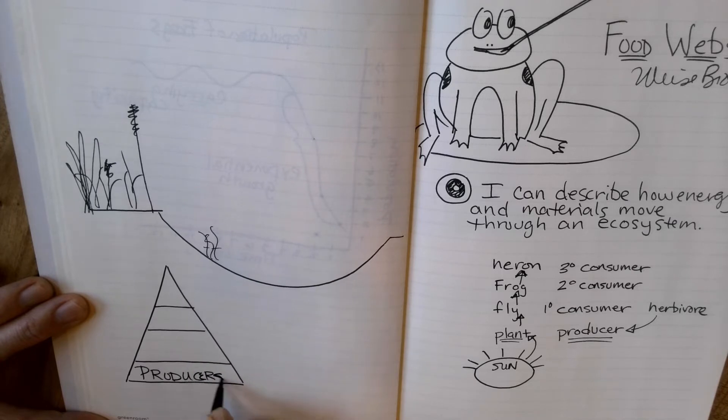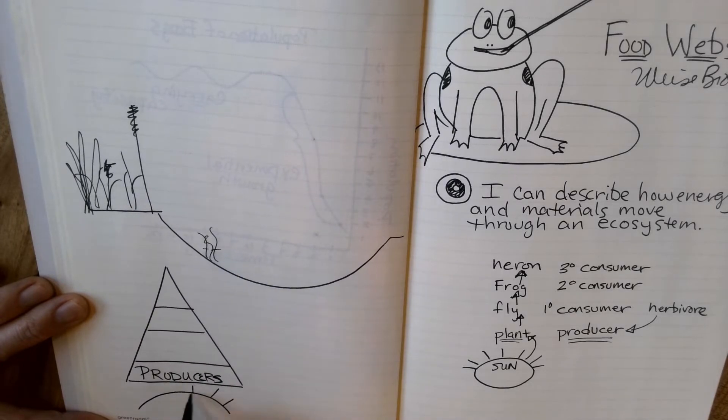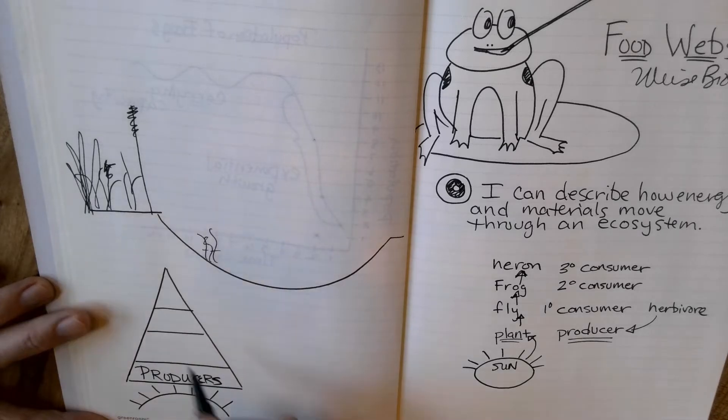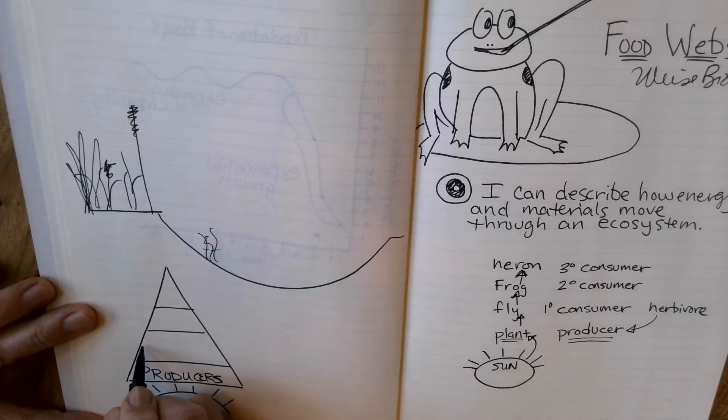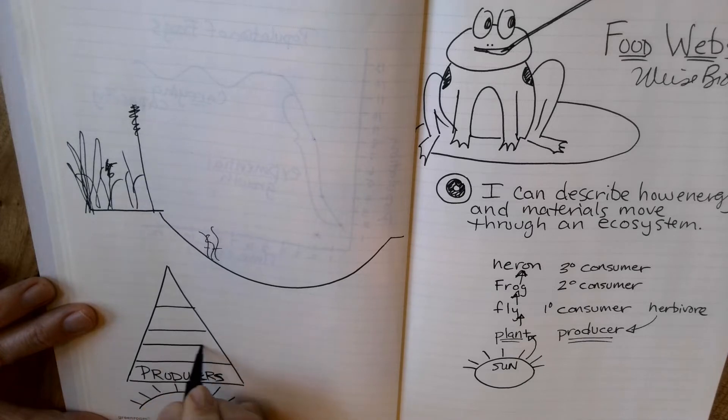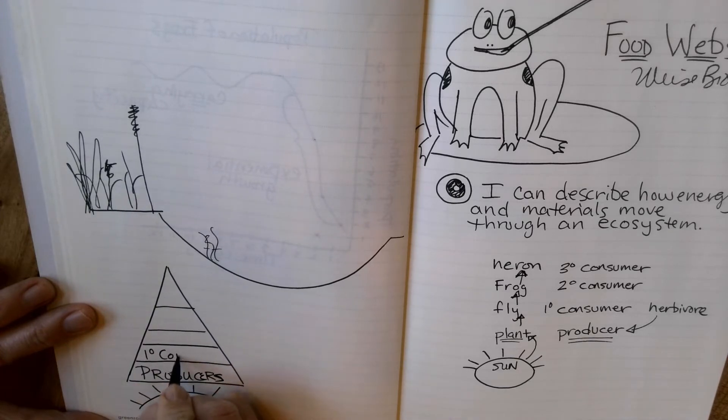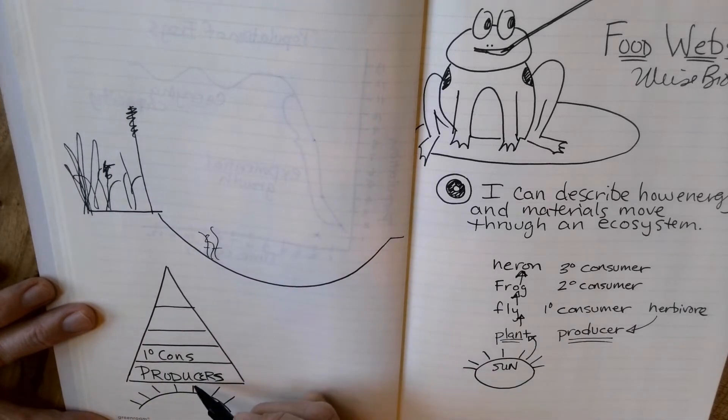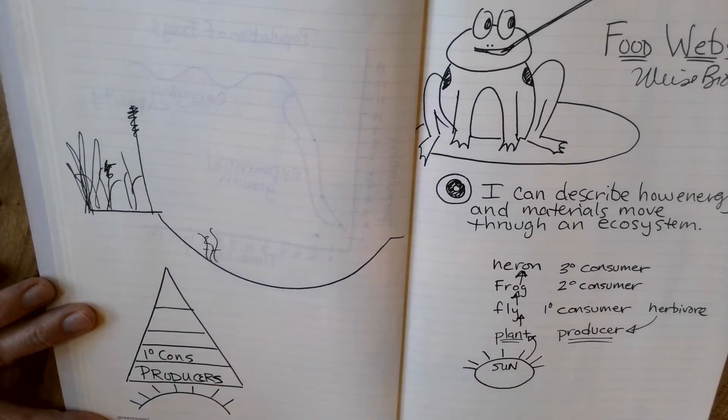Those producers get all of the energy that they capture from the sun, and not all the energy that they capture makes it to this next level. Some of that's going to be used by the producer in some way. Maybe they make a flower or a seed. So the next level that I'm going to draw on here is going to be the primary consumer. And that primary consumer, when it eats the producers, is going to also use some of that energy.